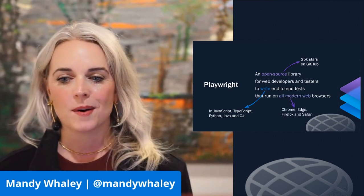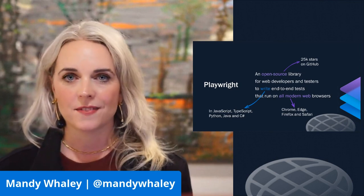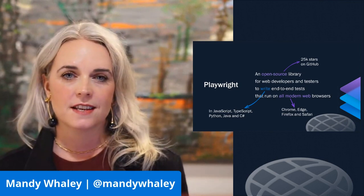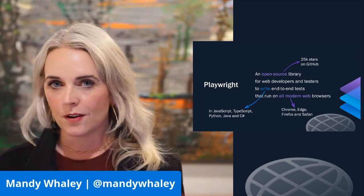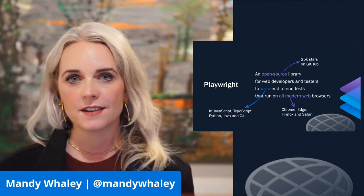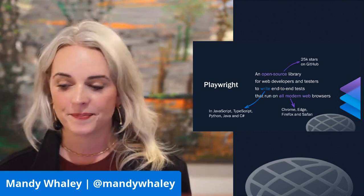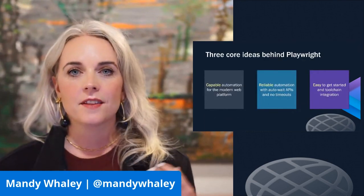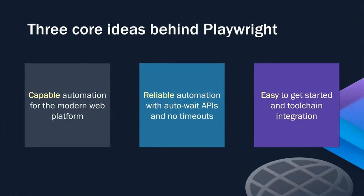Playwright works across all the modern web browsers: Chrome, Edge, Firefox, and Safari. It's really interesting to think that Playwright WebKit works on all operating systems, so you can do things like run Safari tests in your Linux-based CI-CD pipeline. The three core ideas behind Playwright are capable, reliable, and easy. Capable automation for modern web platforms — modern web platforms are changing rapidly with new frameworks and new browser features — and the Playwright community and team are keeping pace, making sure Playwright works with everything you want to develop with.